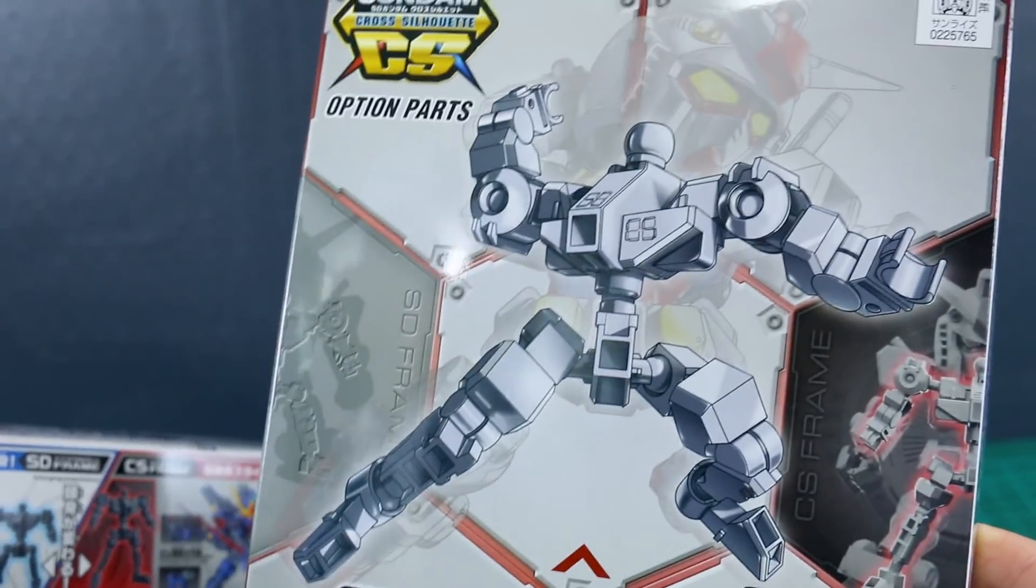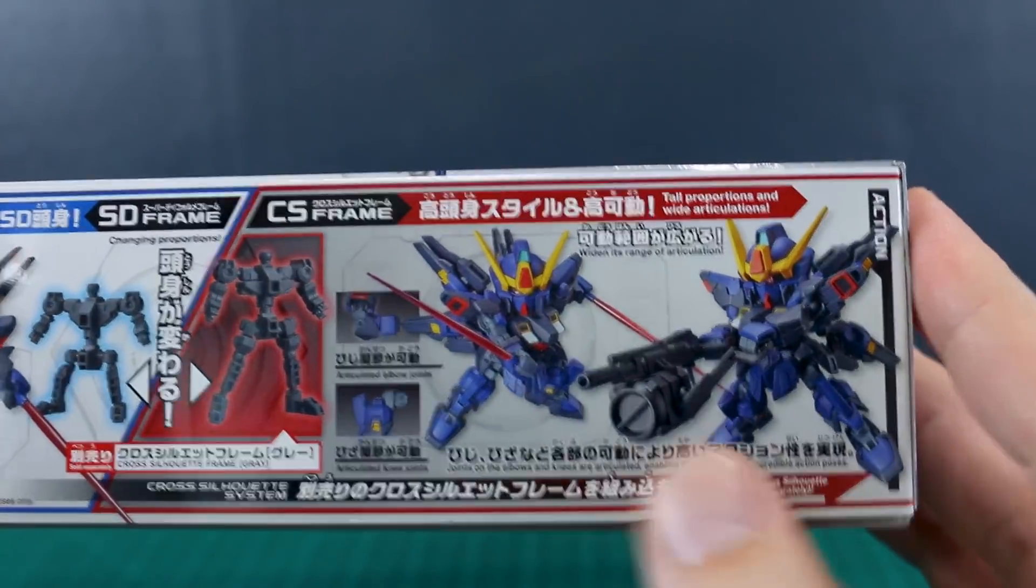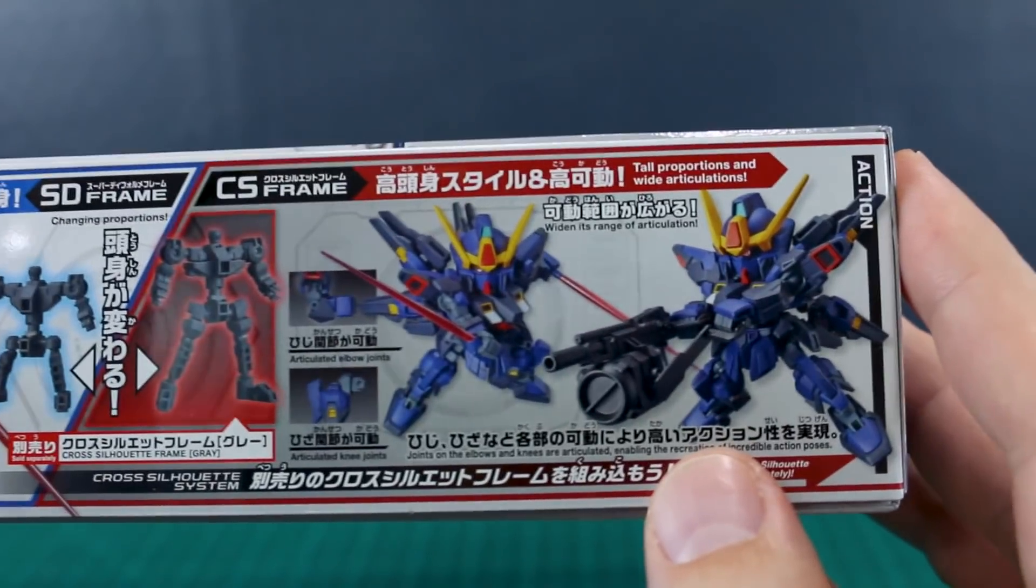You can make it a little bit more movable like that. So I do have one of those here on hand. I'll be putting into this, so I'll be able to show you guys what it's going to look like just as the normal mode and then the cross silhouette mode with the CS frame in there.